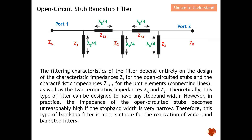The filtering characteristics of the filter depend entirely on the design of the characteristic impedance Zi of the open circuit stub. The filter characteristics also depend on the characteristic impedance of the connecting line, which contributes to the filter response. Last but not least, the two terminating impedances Za and Zb also play a role in the frequency response of the filter.